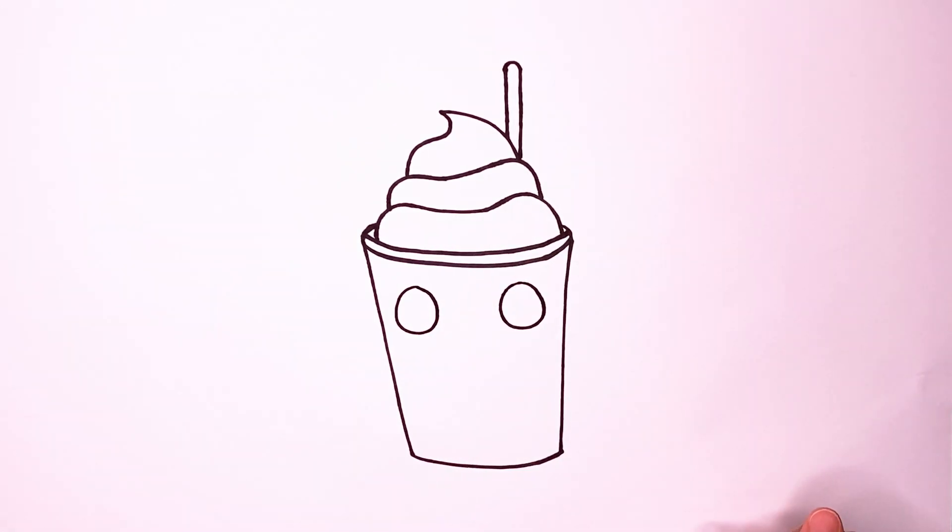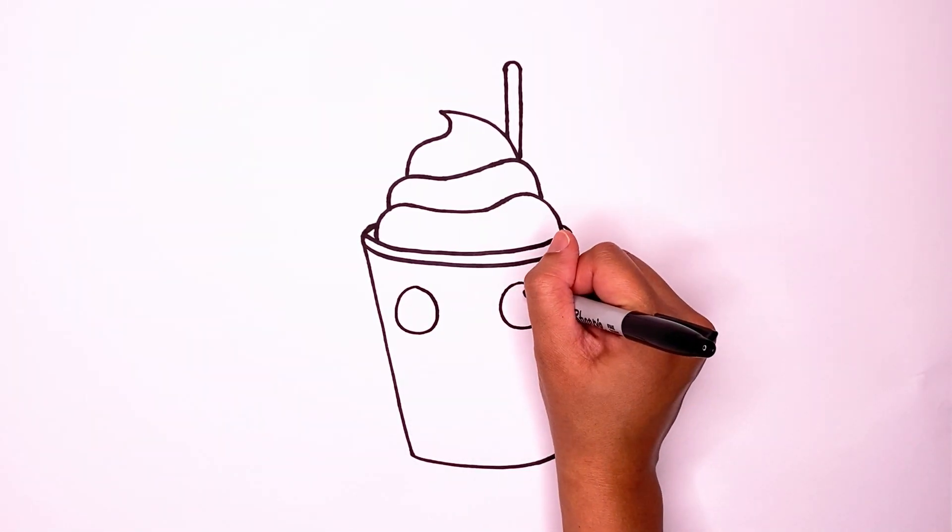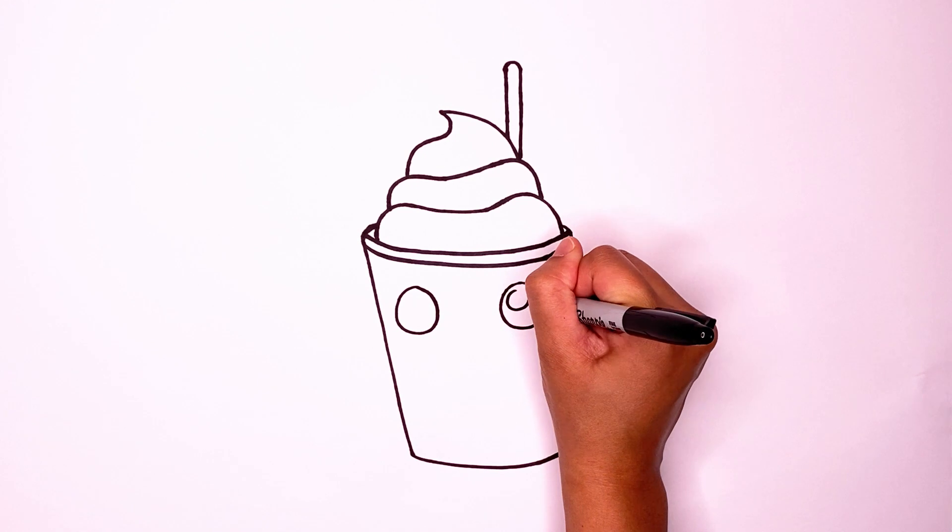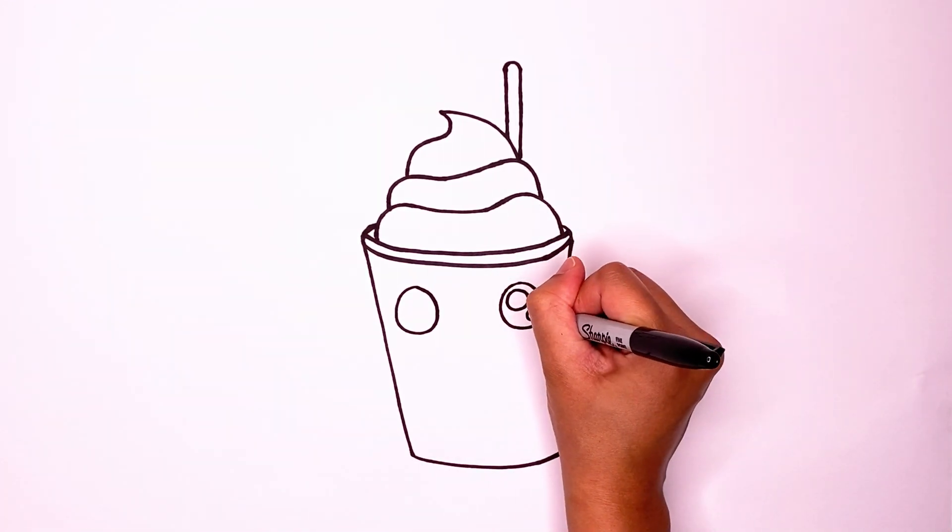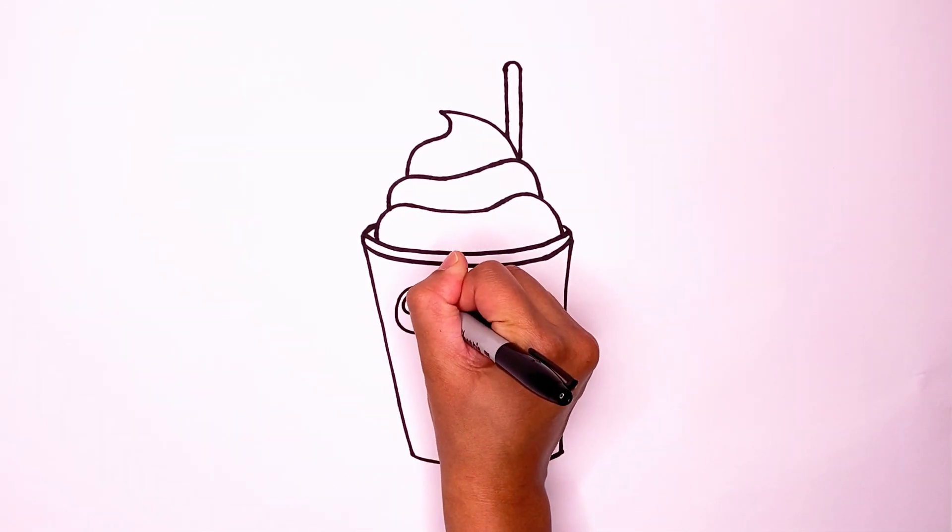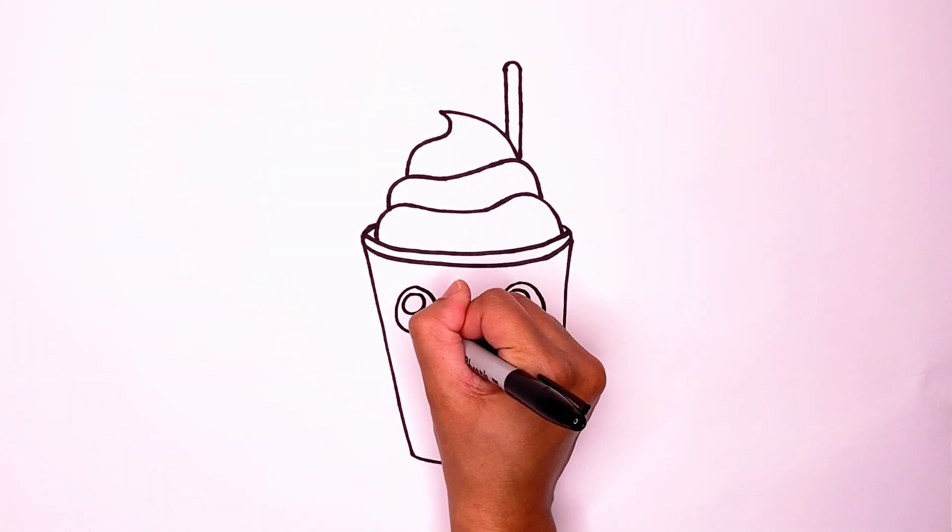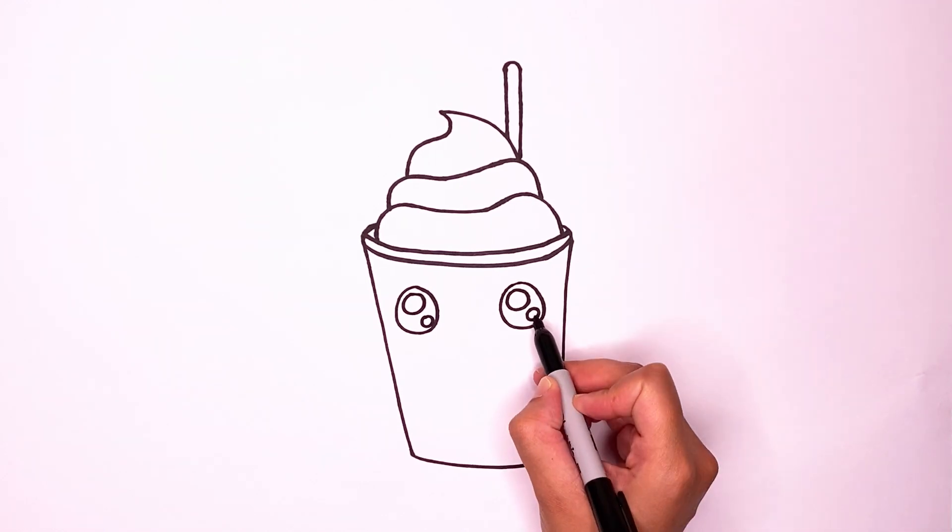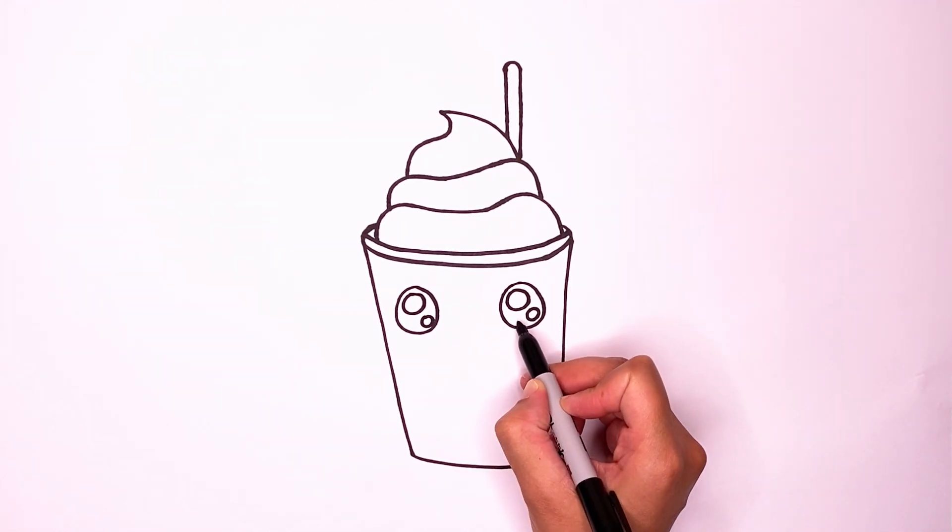I'm going to make my eyes kind of shiny. You can do whatever you'd like to yours. Mine's going to have a big curve and then a smaller one. Big and then one more small. Then the inside of these are going to be white and the outside will be black.